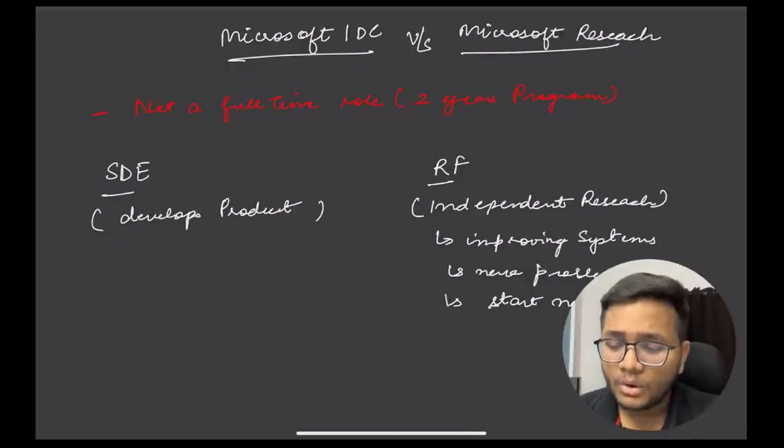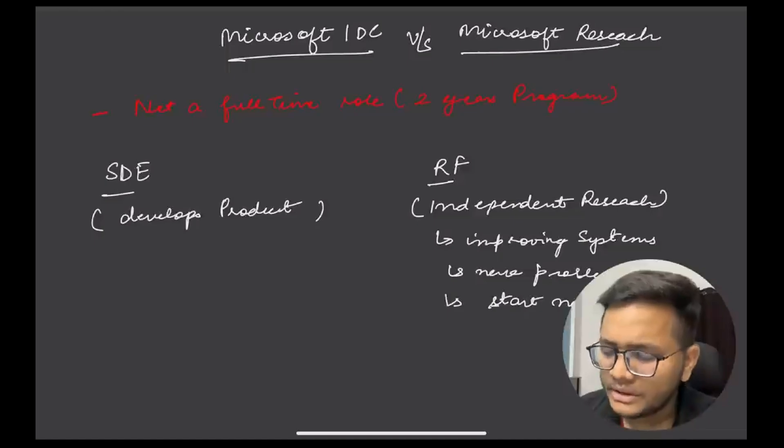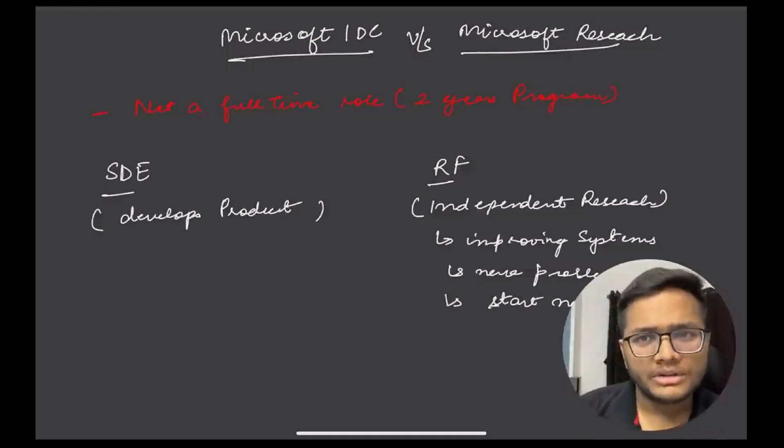SD roles involve product development and hardcore coding, while Research Fellow roles focus on independent or team-based research rather than direct product development. You'll improve systems, work on new problems, and potentially start new research projects. It's research-oriented, whereas software engineering is product-focused.